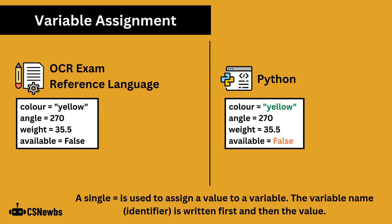Strings, which are a collection of letters, numbers, and/or symbols, require speech marks. Integers, which are whole numbers, and real or float values, which are decimal numbers, do not use speech marks. The available variable in this example is boolean, which is true or false with a capital letter.